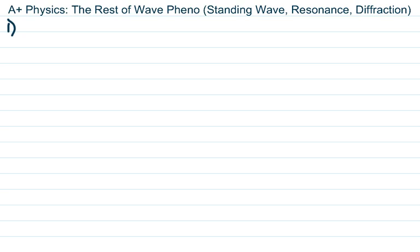The two waves need to be exactly the same: same amplitude, frequency, wavelength, and speed, except moving in opposite directions. As they move they shift into and out of phase. When completely in phase you get maximum constructive interference — the largest possible wave, crests meeting crests and troughs meeting troughs. With maximum destructive interference they're 180 degrees out of phase and crests meet troughs, canceling each other out.